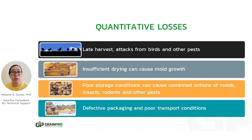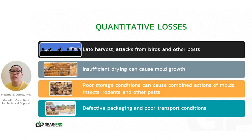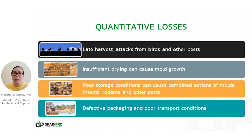Poor storage conditions encourage insects to thrive and allow molds to grow. High humidity is allowed to enter the commodities, encouraging mold growth. If the area is not clean, rodents and other pests are also allowed to thrive. These agents — insects, pests, and molds — affect our commodity because if quality is affected, some of these grains will go to waste as they are already deteriorated and not fit for consumption. Throwing them away is considered a loss.